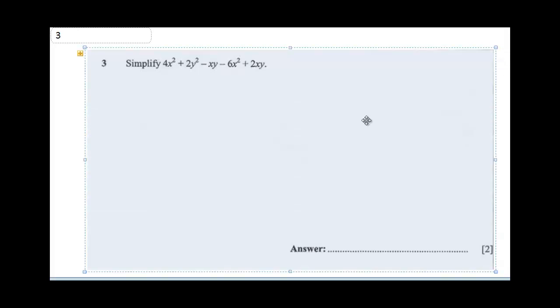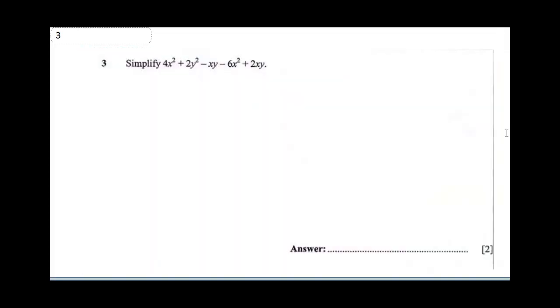Question 3 says simplify 4x² + 2y² - xy - 6x² + 2xy. Now to simplify this, let's collect like terms. This will be 4x² minus 6x² plus 2y² plus 2y² minus xy plus 2xy.